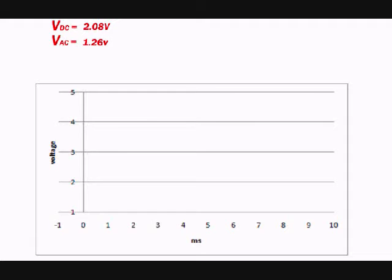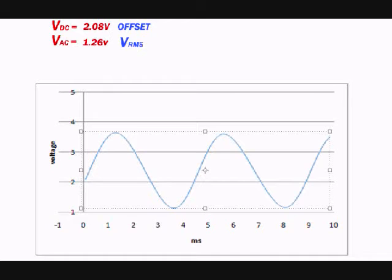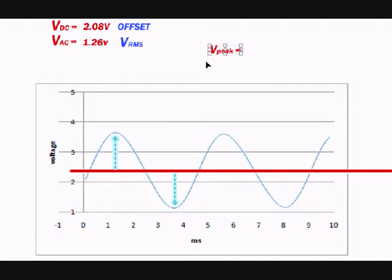By theory, our VDC is going to be our DC offset on the oscilloscope, and our VAC represents V root mean square. By using this we can find the amplitude of the wave which gives us the VAC on the oscilloscope.